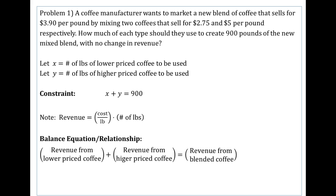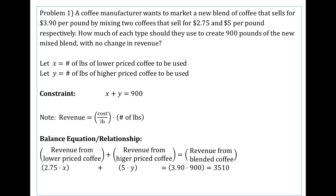For the revenue from the blend, we want 900 pounds selling at $3.90 per pound, so that's $3.90 times 900, giving us $3,510. The revenue from the lower-priced coffee is $2.75 per pound times x pounds. The revenue from the higher-priced coffee is $5.00 per pound times y pounds. So this equation becomes: 2.75x plus 5y equals 3510.